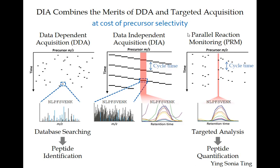The way our lab tends to look at DIA data is using a targeted approach, as Mike mentioned, where we look at it more similarly to a PRM or SRM dataset. We can use Skyline to extract chromatograms from DIA data in the same fashion as targeted approaches like PRM, and the quantitation is basically the same. It's just that there are complications in figuring out what those peptides are, and the data is noisier.